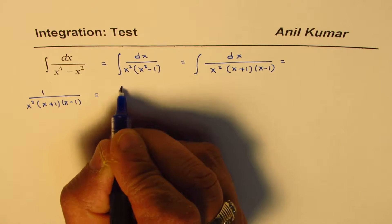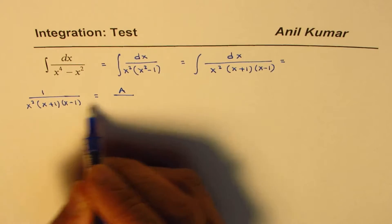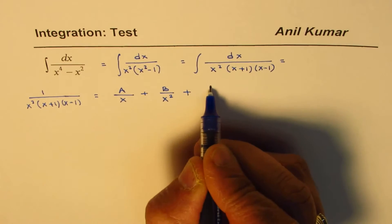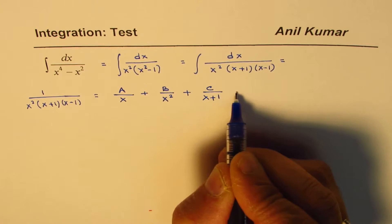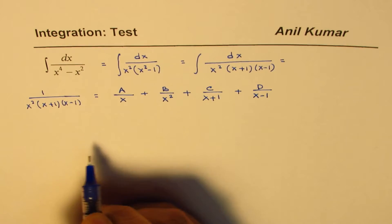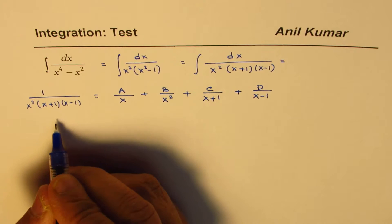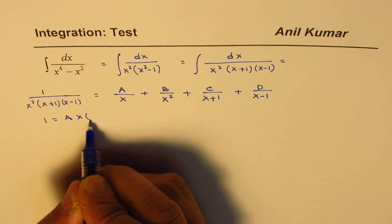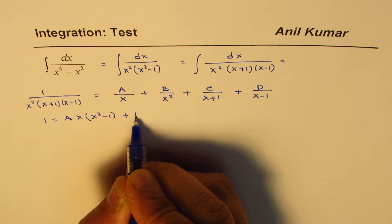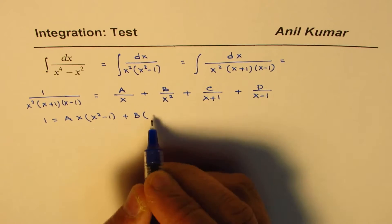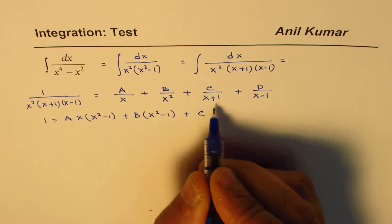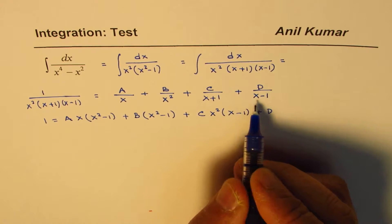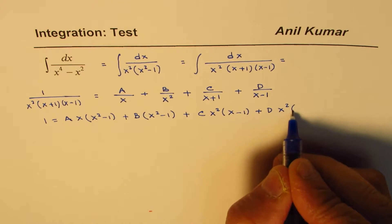We'll write this as a sum of four fractions: A over x, plus B over x squared, plus C over (x plus 1), plus D over (x minus 1). If I multiply everything by the denominator, we get 1 equals A times x(x squared minus 1), plus B times (x squared minus 1), plus C times x squared(x minus 1), plus D times x squared(x plus 1).